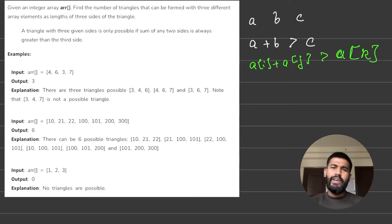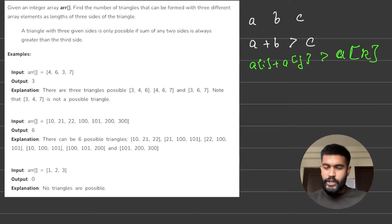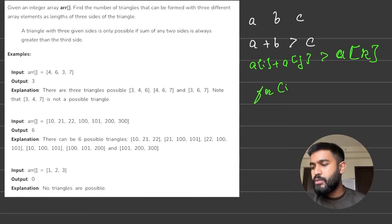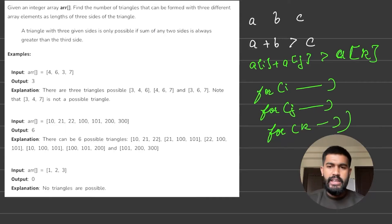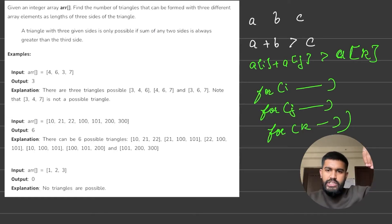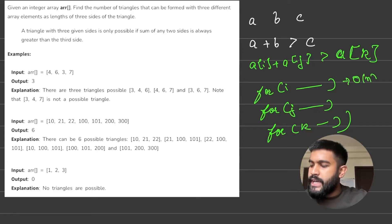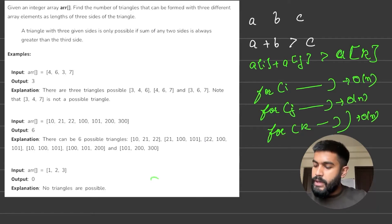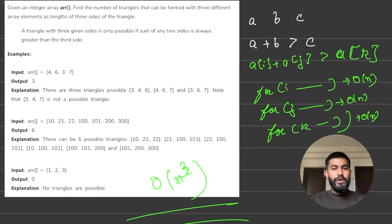The most basic approach is to find three elements from the array that satisfy this condition. We can simply use three nested for loops — one for i, one for j, and one for k. For each i we find every j, and for each j we find every k. This loop runs O(n) times each, giving a time complexity of O(n³). The space complexity is O(1) since we only use variables and no auxiliary space.